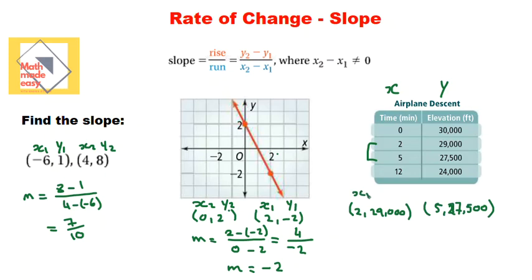Again, x1, y1, x2, y2. Naming the points will make you avoid mistakes when you substitute. So we have 27,500 minus 29,000 over 5 minus 2. Your answer is going to be negative 1,500 over 3. So the slope in this case is negative 500.